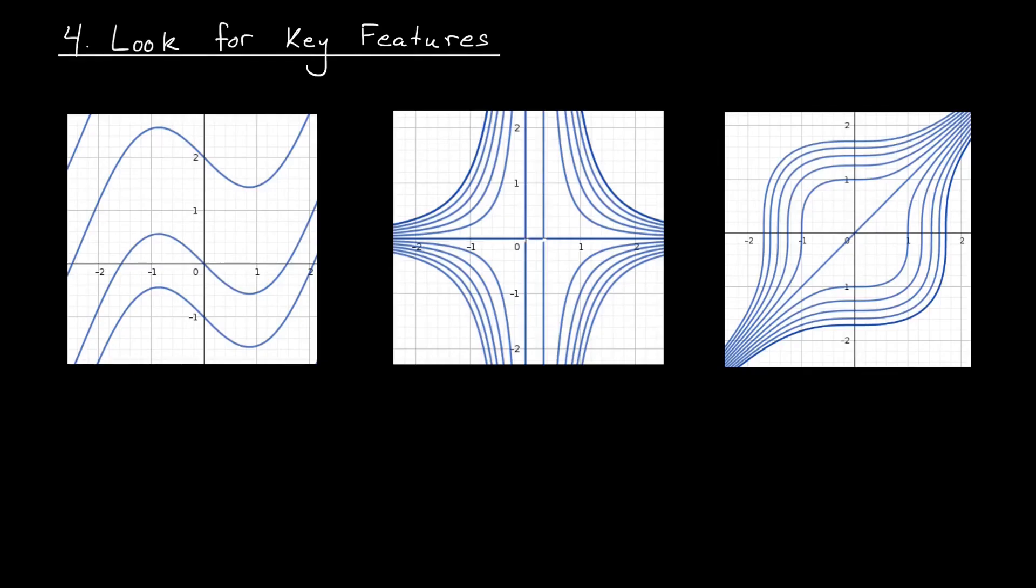Another important strategy for matching functions to level curves is to look for any key features in your contour plots. For example, I've included three of the more complicated contour plots from our first slide. We're going to look for key features that might help us to match them to functions. In this first one, the thing that stands out to me is the periodic behavior of my level curves. Perhaps there's some periodicity here that might be suggestive of a sine or a cosine function.